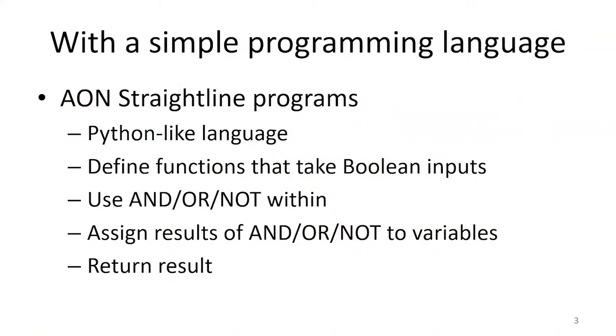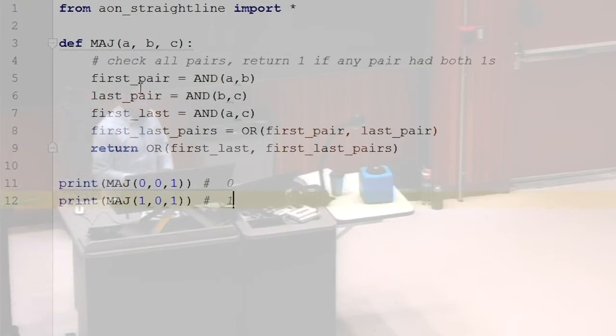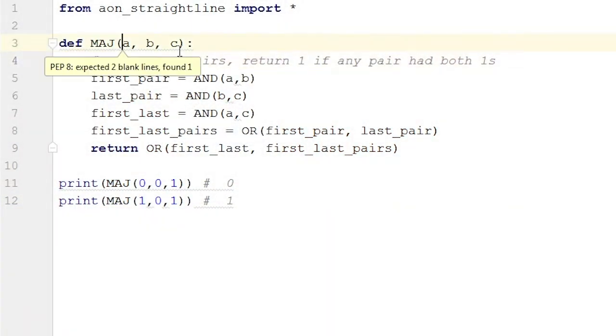Let's do a refresher. We have AND, OR, NOT straight-line programs. This looks like Python, where we define functions that take boolean inputs. We can do AND, OR, or NOT within our programs and assign those values to variables, then use those variables to compute other variables, and eventually return some result. This was an example of the majority function for straight-line programs. Majority returns one if any two of the three input bits are both one. Otherwise, the majority weren't ones, and we return zero.